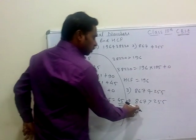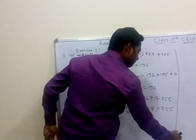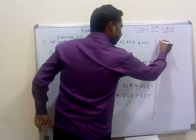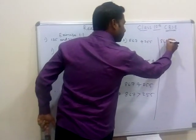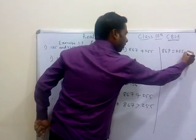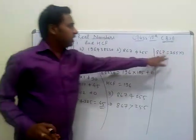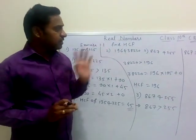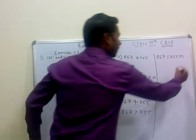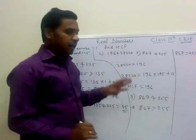So 867 = 255 × 3 + remainder. 255 × 3 = 765. Since we have 867, the remainder is 867 − 765 = 102. So our remainder is 102.